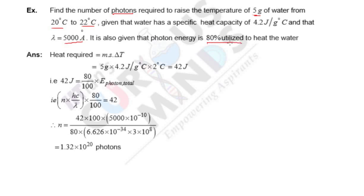So 80% of this energy is utilized to heat the water. You know heat required is m times S times delta T. S is nothing but specific heat capacity.